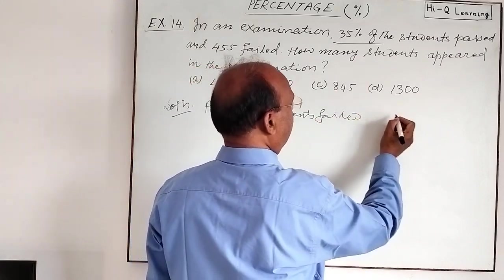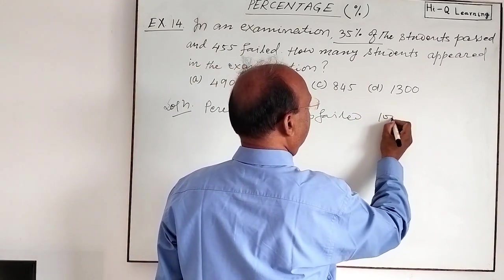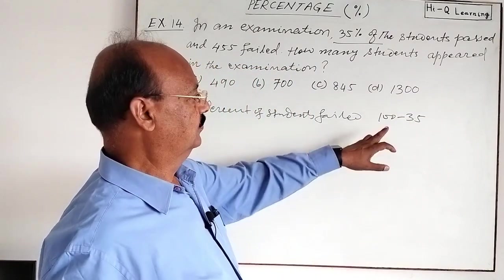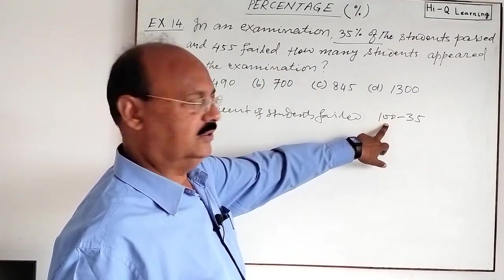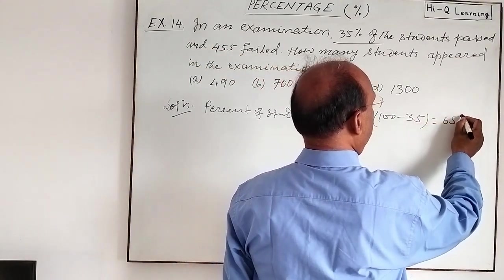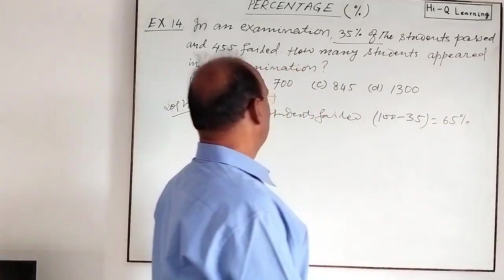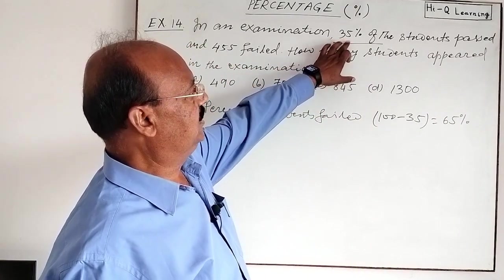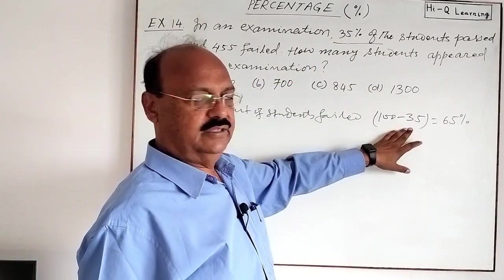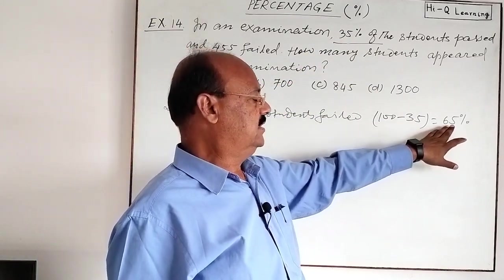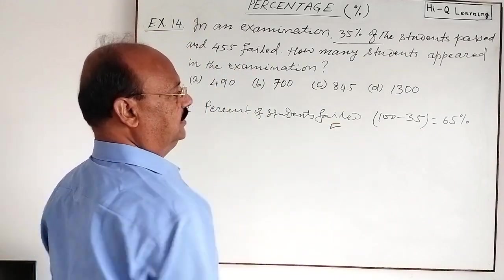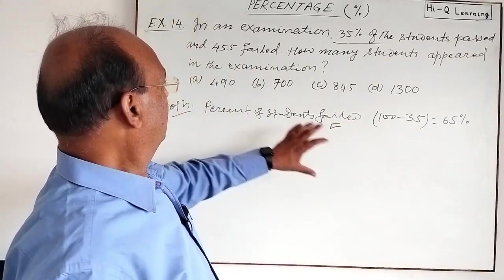We find this by subtracting 35 from 100. So this gives us 65 percent. If 35 percent of the students passed the examination, it means 100 minus 35, that is 65 percent of students failed. The number of students who failed is 455.